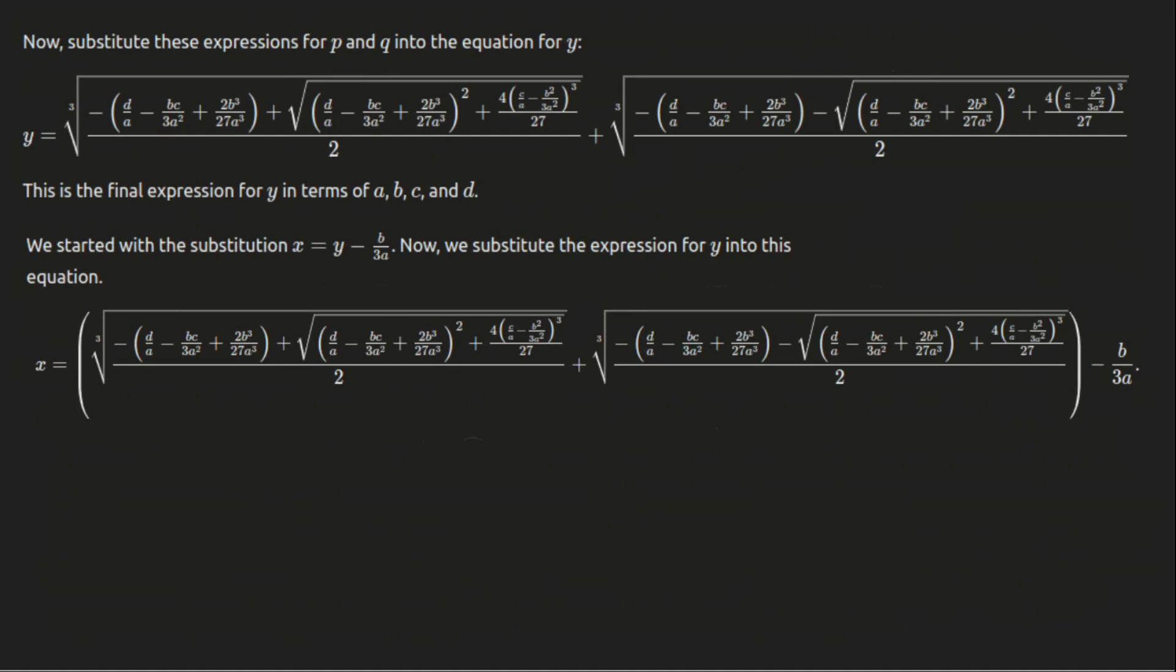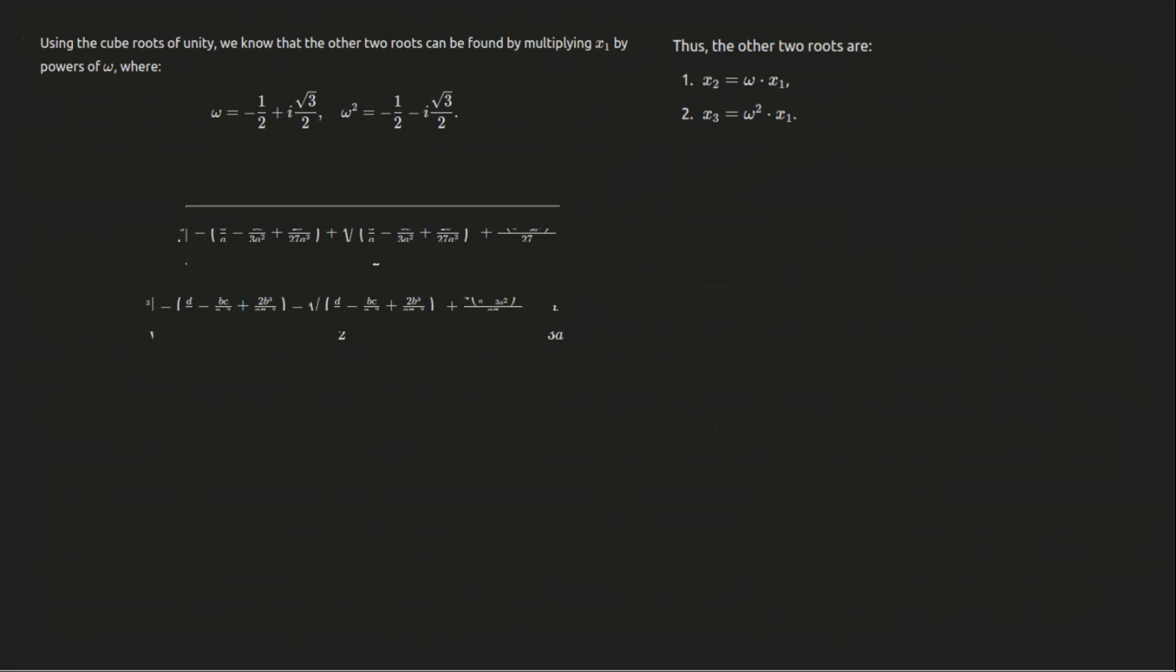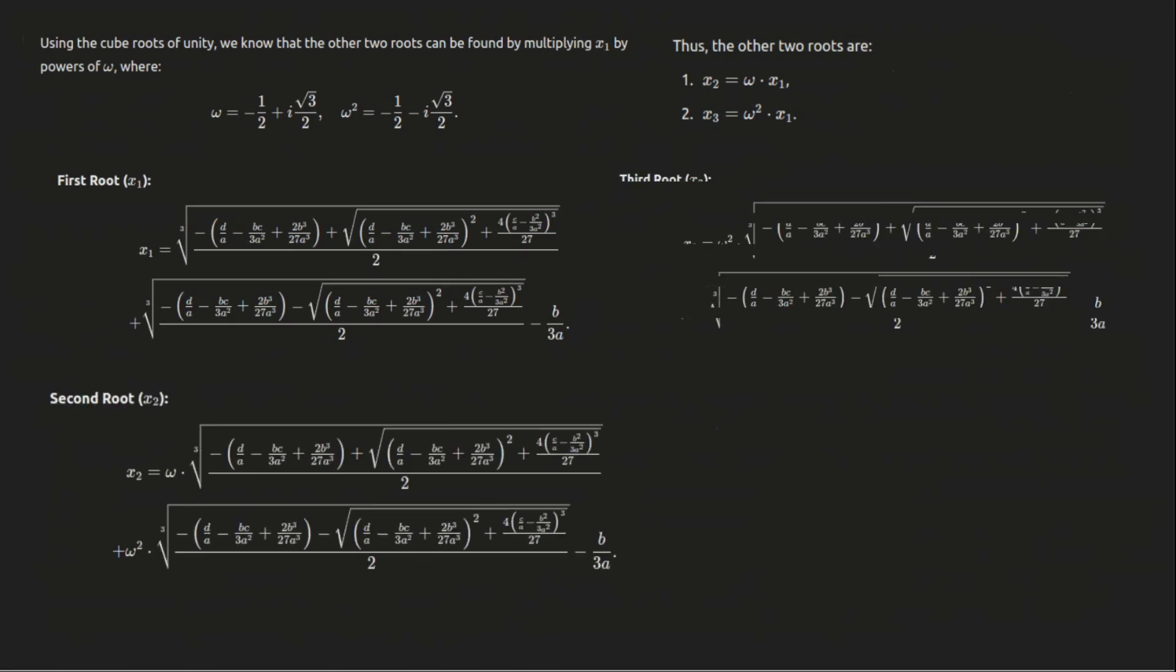Now, with the primary root found, we need the other two roots. The cube roots of unity, represented by ω, give us the other roots. By multiplying the primary root by ω and ω², we get the second and third roots. Thus, the second root x₂ is ω times the first root, and the third root x₃ is ω² times the first root.